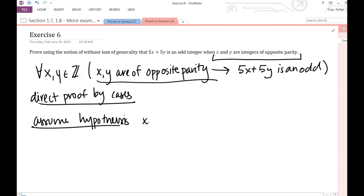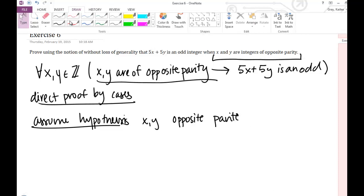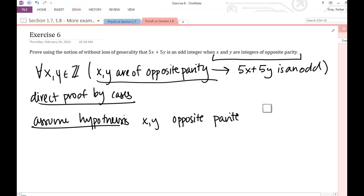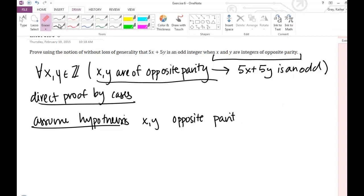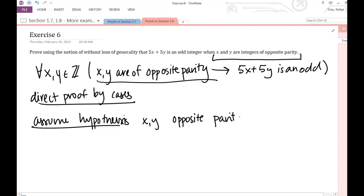so if we assume our hypothesis, it would be that x and y are of opposite parity. So now we need to go into two cases. And so with my little sketch here, I'm going to go ahead and talk about both cases.